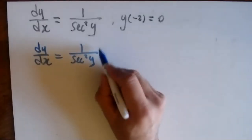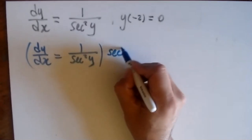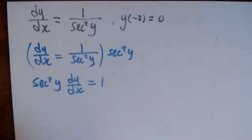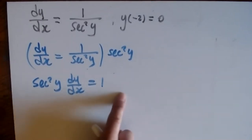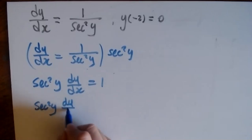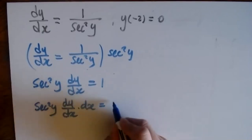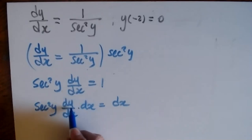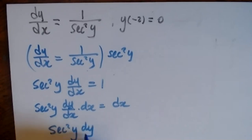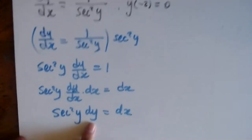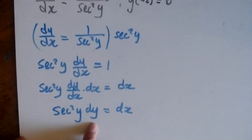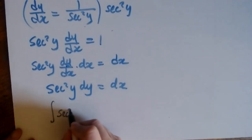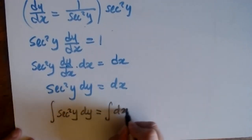Then I multiply everything by dx. So sec²(y) · dy/dx · dx equals 1 · dx. The dy/dx · dx becomes dy, so I get sec²(y) dy = dx. Now the variable y is inside sec²(y) with its differential dy on the same side, and all x's are on the other side. To resolve, I integrate both sides: integral of sec²(y) dy equals integral of 1 dx.